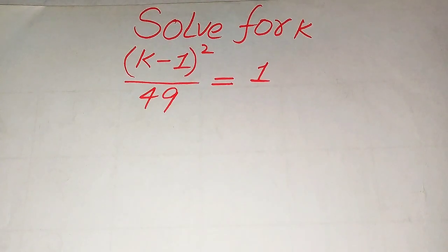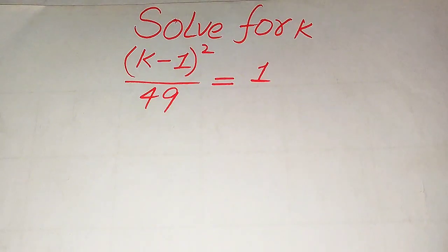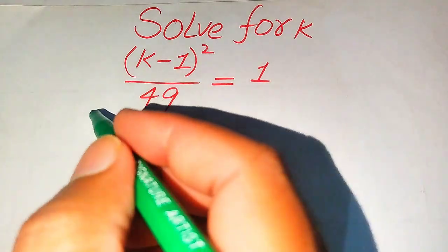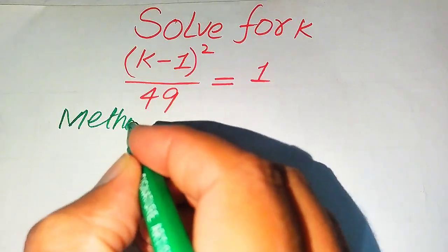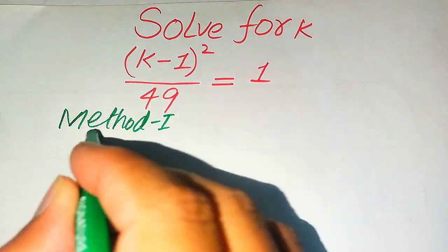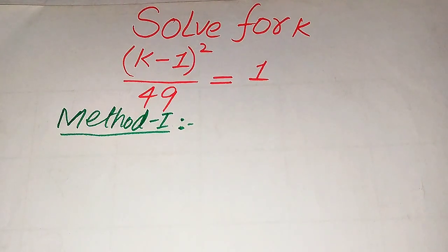Hello everyone. How to solve this problem for the values of k: if we have (k minus 1) whole square divided by 49 equals 1. We will solve this problem for all the values of k, and at the last we will verify which of the roots are solutions of this equation and which are extraneous roots. We will solve this problem using two methods. If you have any other method in mind, please write it in the comment section.